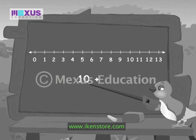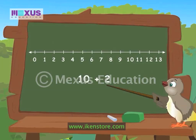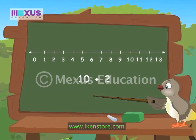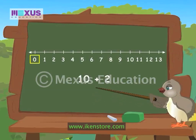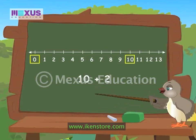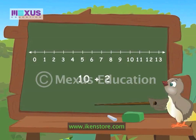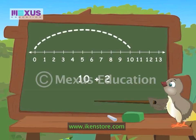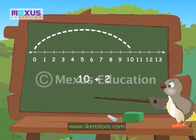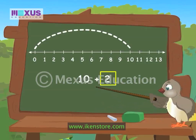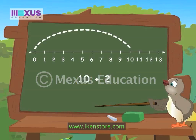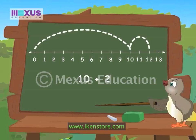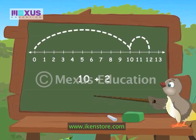Let's add 10 and 2 using a number line. We start from zero and jump to the first number to be added. So, we jump from zero to ten. That's correct. Now, we have to add the number two with the number ten. So, we jump two steps to the right of ten. That is number twelve. Good, Amber. So, the answer is twelve.